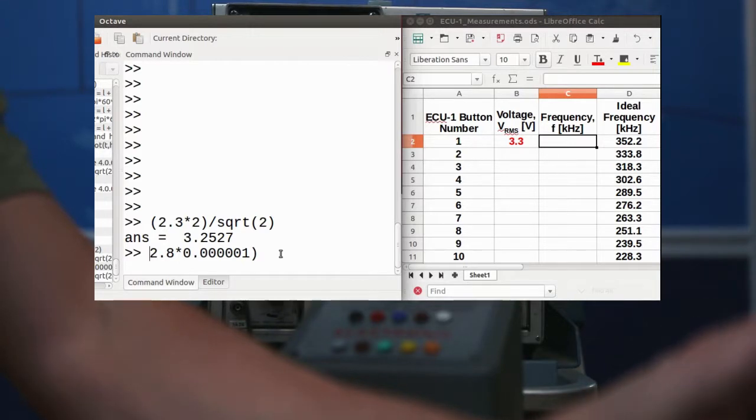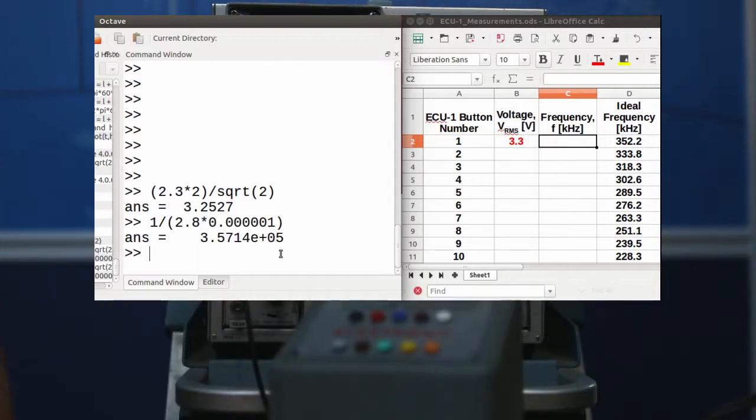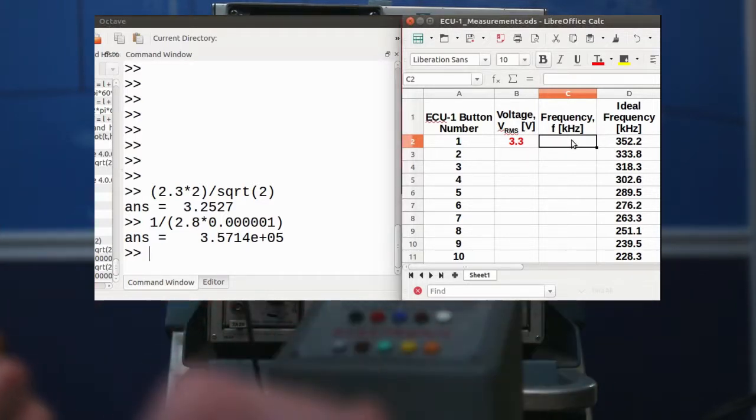And this is the wavelength. What we want is the frequency, which is the inverse of the wavelength. And that gives us 357.1 kilohertz. And according to the manual, it should be 352.2 kilohertz. I'm going to call that good.